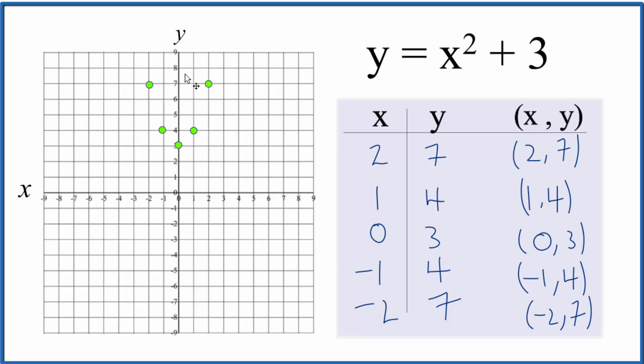We can connect these points here to get our graph. Let's pull this down here and move these up some. Put arrows up here to show that it goes to infinity. This is the graph for y equals x squared plus 3. You can see that we have a parabola.